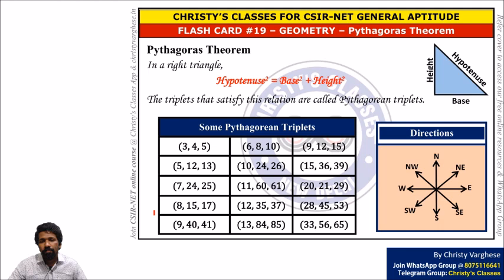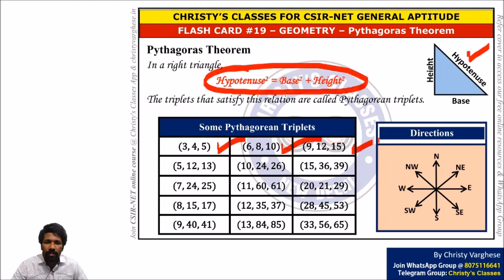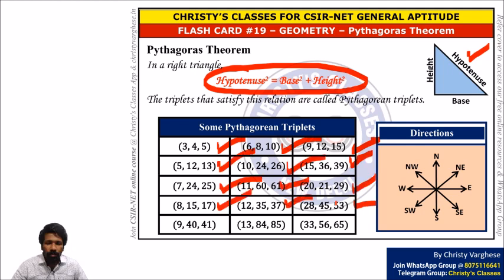And then Pythagoras theorem — in some questions it is needed. Hypotenuse squared equals base squared plus altitude squared in right triangles. Triplets which satisfy Pythagoras theorem are called Pythagorean triplets, and any multiple of a Pythagorean triplet is also Pythagorean. We discussed the same in geometry class. If you know this much, you can do all the questions here.